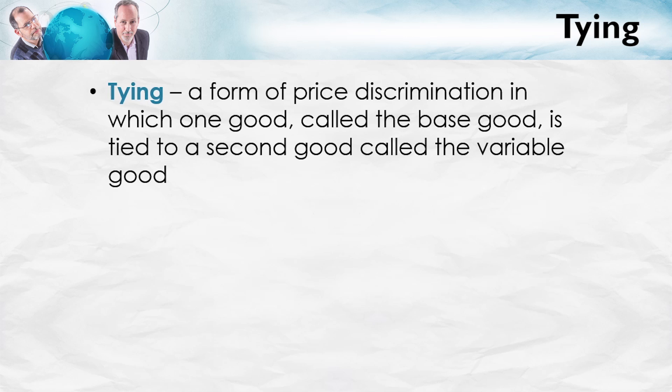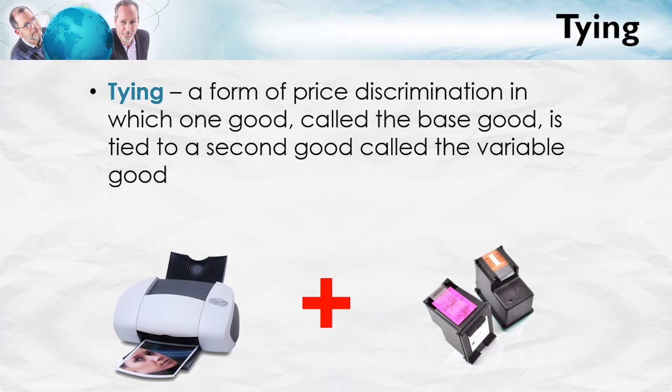Let's consider some examples. Printers and ink. Here, printers are the base good — you buy one printer, and it's tied to a second good. You must buy the ink from the same company to use it in that printer. The ink you could buy a little bit or a lot. The more pictures you want to print, the more ink you have to buy. One printer plus a variable amount of the second good, the ink.